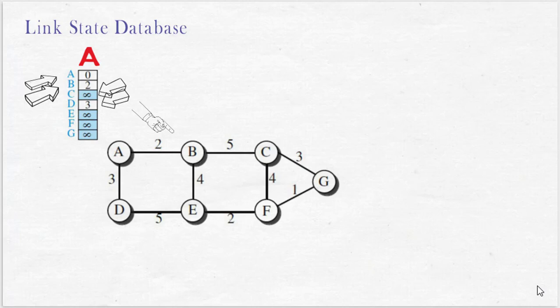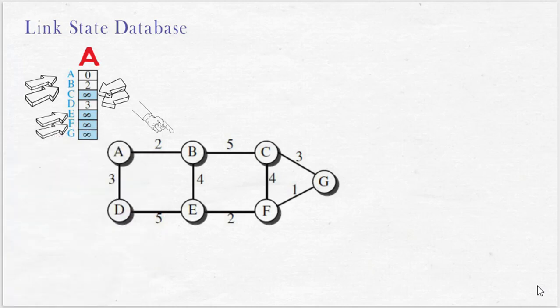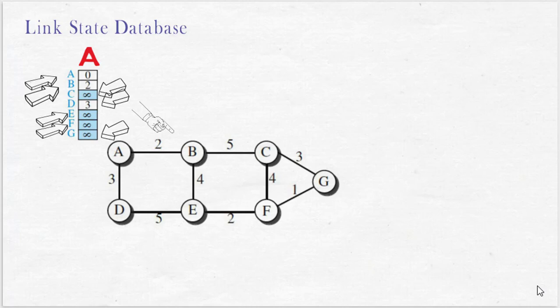The cost from node A to D is 3. Other nodes in the given network are not adjacent to node A, so the cost from node A to other nodes E, F, G are infinity.